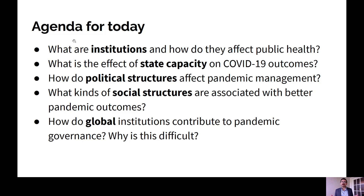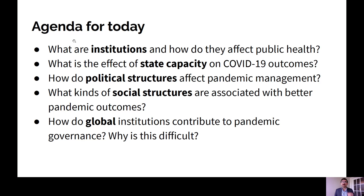Our agenda for today is: we're going to ask the question, what are institutions and how do they affect public health? We're then going to talk about what the effect of state capacity is on COVID-19 outcomes. We'll then think about how political structures that shape decision-making affect the management of the pandemic, what kinds of social structures are associated with better pandemic outcomes — including cultural norms and mores — and how global institutions contribute to pandemic governance and why collective action through global institutions can sometimes be so difficult.